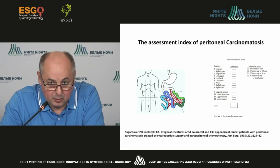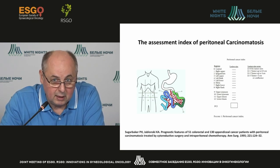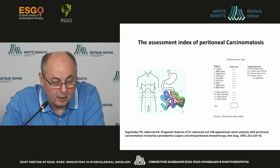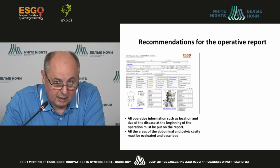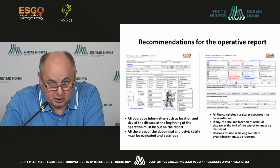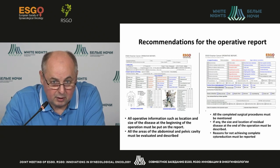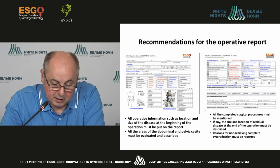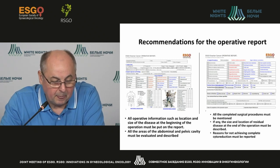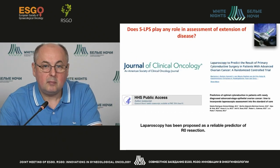Starting with 1995, one of the integral indicators used today in many clinics is the so-called index of peritoneal carcinomatosis, which was suggested by Paul Sugarbaker. And in some of the clinical recommendations, this particular method is the basic method for the assessment of the manifestations of the disease. It's important to get proper information on localization and the size of the manifested disease, to assess the involvement of different parts of the abdominal cavity in the process, and of course, it's very important to record all the focal points which cannot be resected, which cannot be debulked.